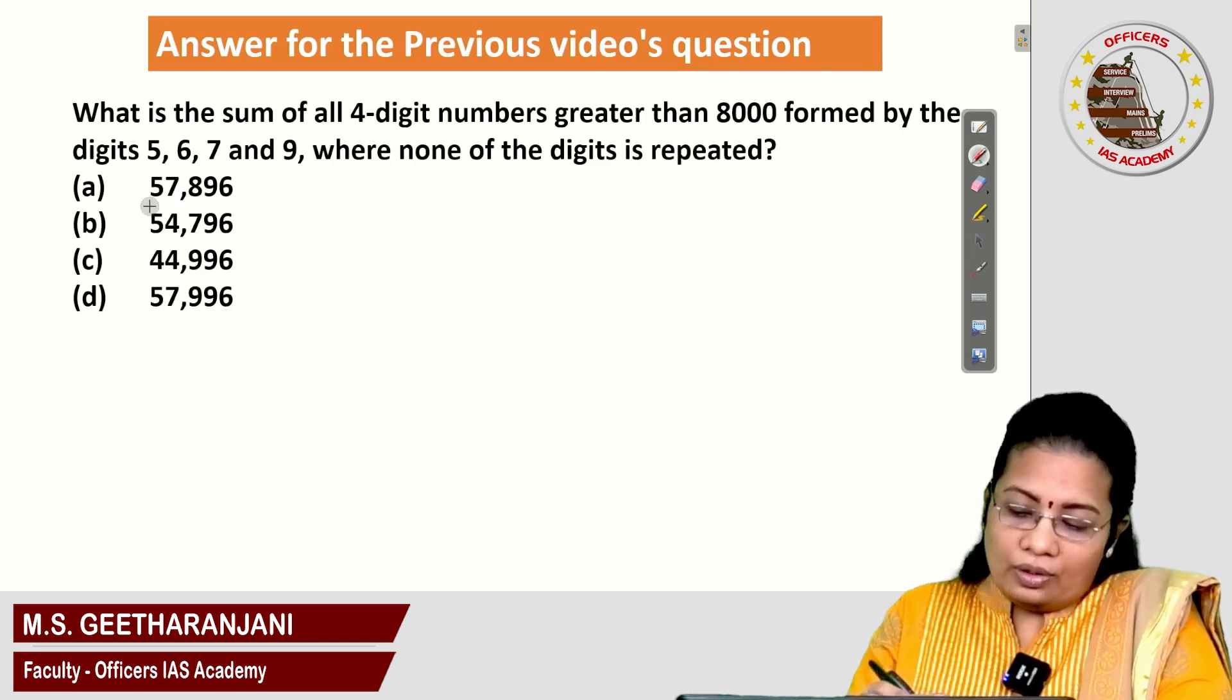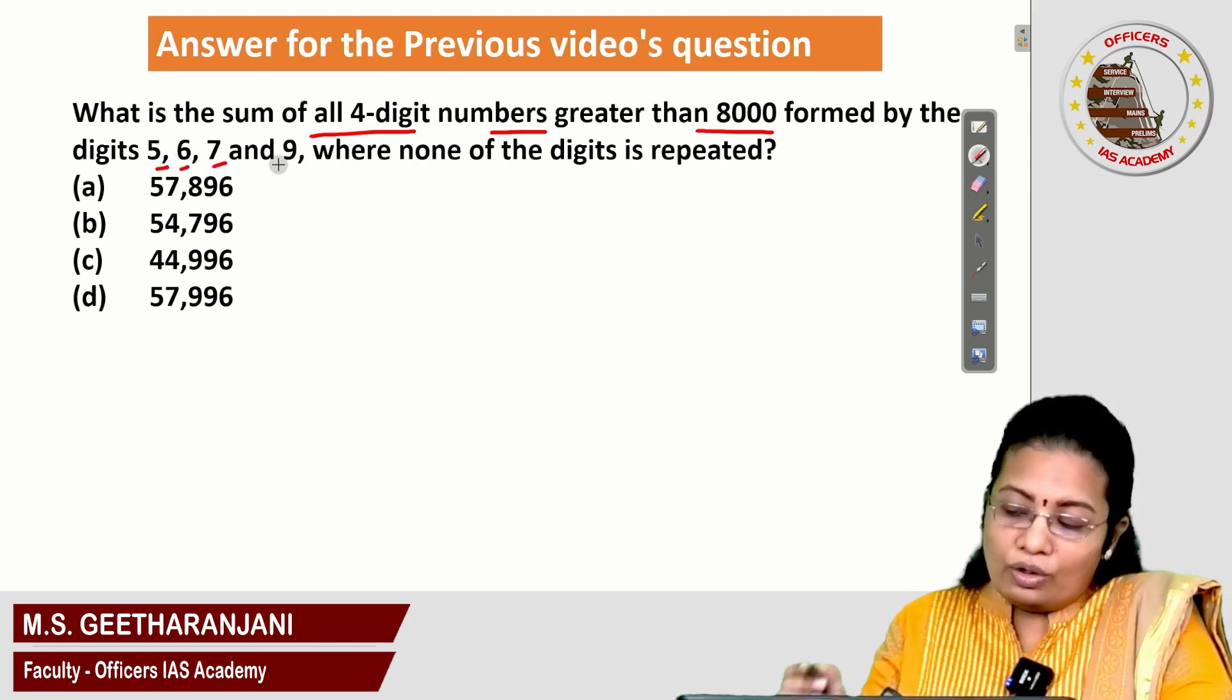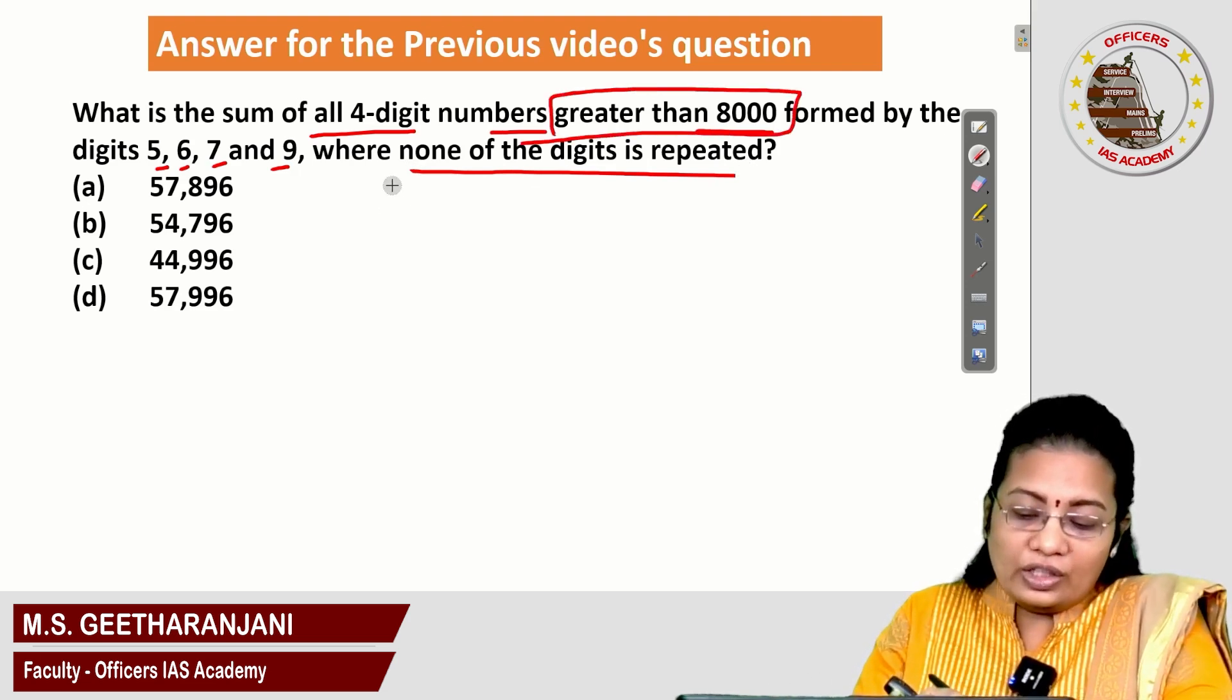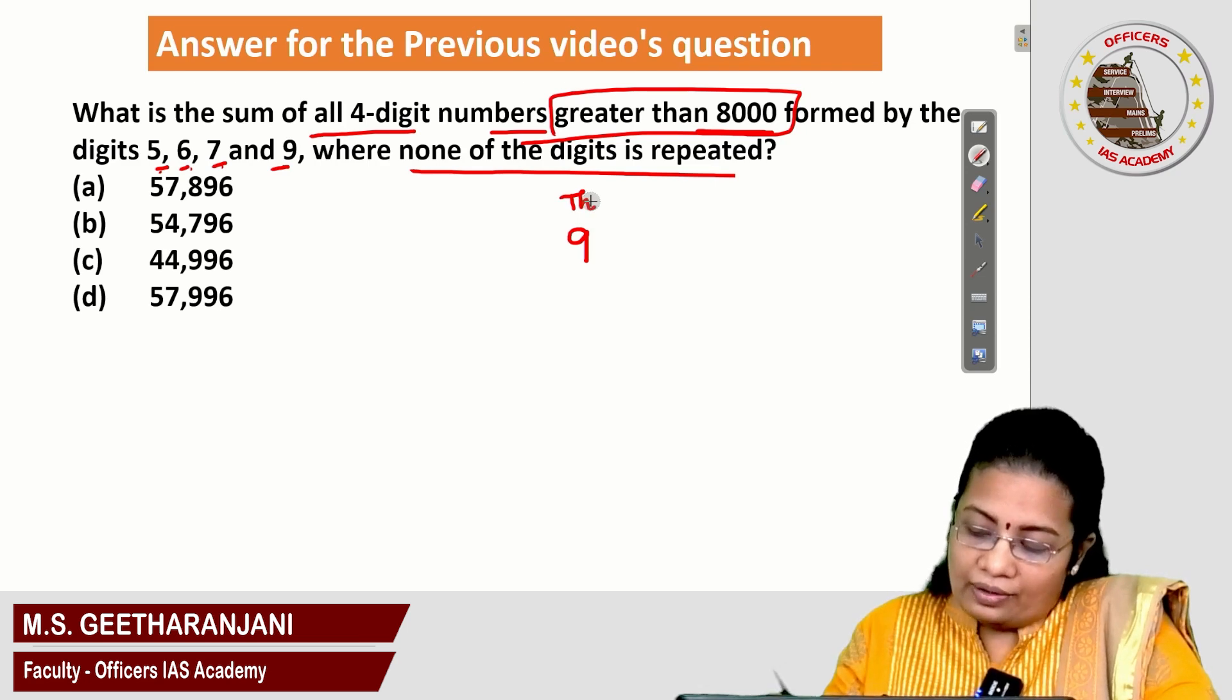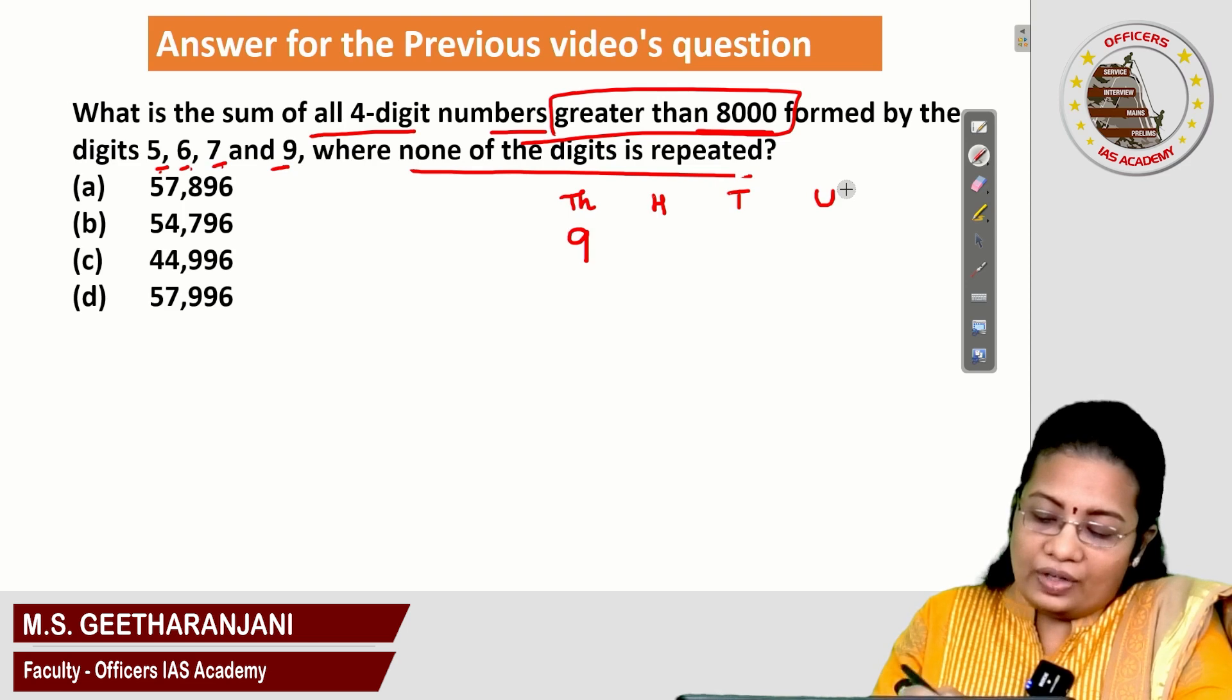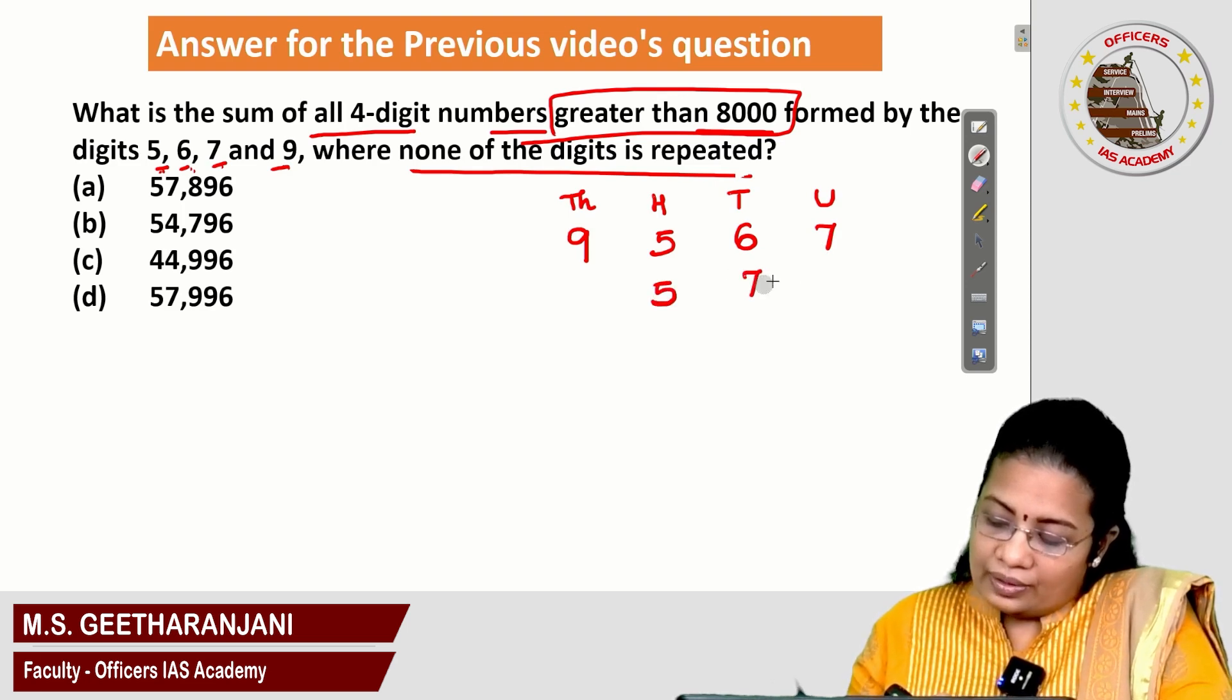Answer for the previous video's question. What is the sum of all 4-digit numbers greater than 8000 formed by the digits 5, 6, 7, and 9, where none of the digits is repeated? Here, the requirement is greater than 8000 using the numbers 5, 6, 7, and 9. Let me take number 9 in the thousands place. Remaining values in the hundreds, tens digit, and unit digits in the remaining three places. We can make 5, 6, 7 is one variety of number. Another kind, 5, 7, 6. Next, 6, 5, 7.